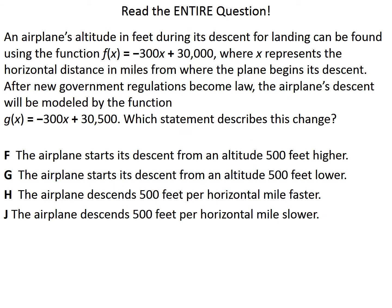Now the next question is going to be similar. An airplane's altitude in feet during its descent for landing can be found using the function f of x equals negative 300x plus 30,000, where x represents the horizontal distance in miles from where the plane begins its descent. After new government regulations become law, the airplane's descent will be modeled by the function g equals negative 300x plus 30,500. Which statement describes this change? The airplane starts its descent from an altitude 500 feet higher? 500 feet lower? The airplane descends 500 feet per horizontal mile faster? Or 500 feet per horizontal mile slower?